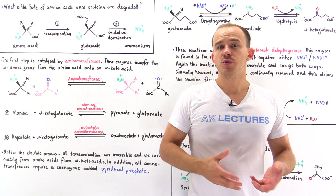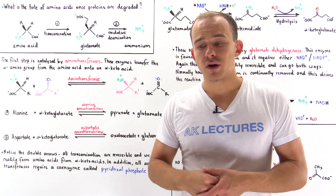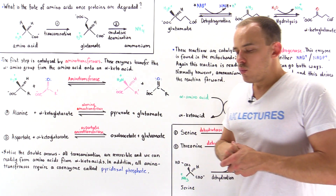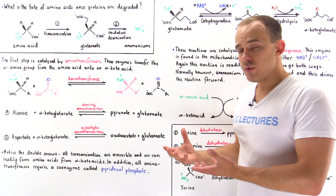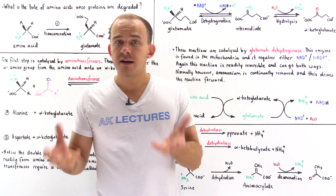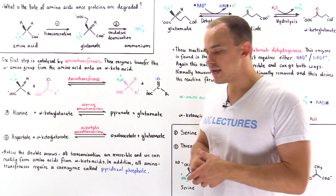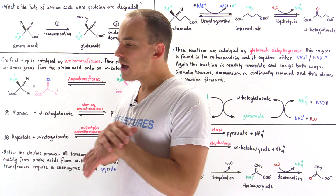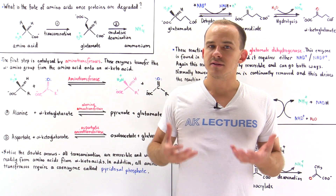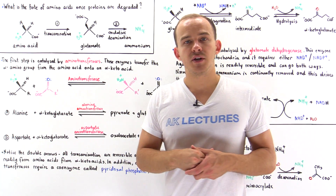Once proteins are broken down into their individual amino acid constituents, what happens to those amino acids next? What is the fate of amino acids once proteins are actually degraded? For the most part, the amino acid can be used in biosynthetic processes to form new molecules. For example, we can use amino acids to build proteins, or we can use amino acids to build nucleotide bases. But let's suppose we have all the proteins and nucleotide bases that our cells can use — what happens to any extra leftover amino acids?